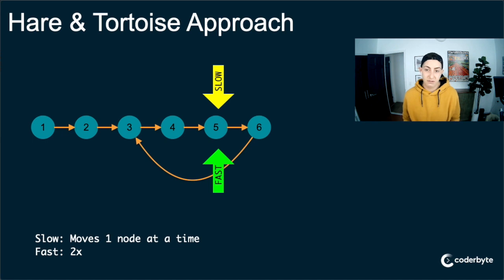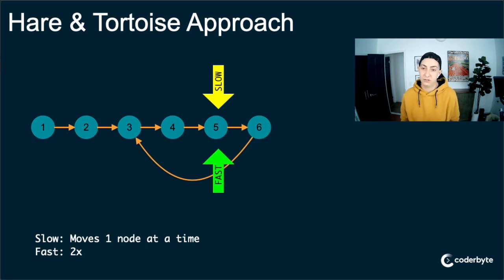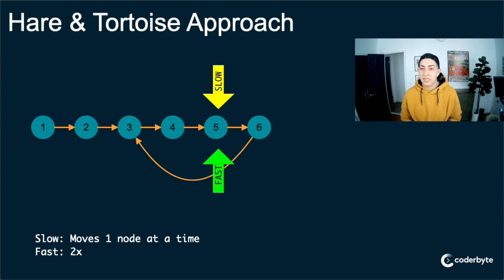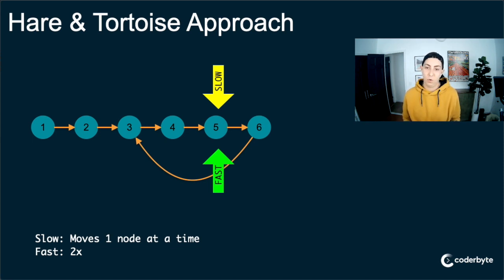That's how this algorithm works. It's very simple when it's reduced to these scenarios. The key here is understanding why we are moving the pointers at these different speeds, and what those speeds are and why.